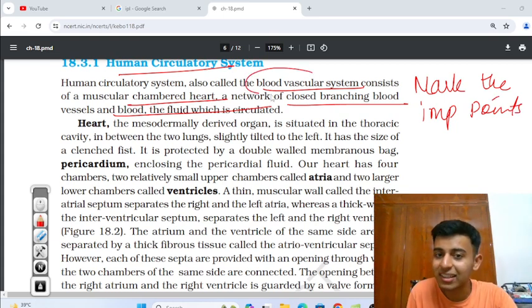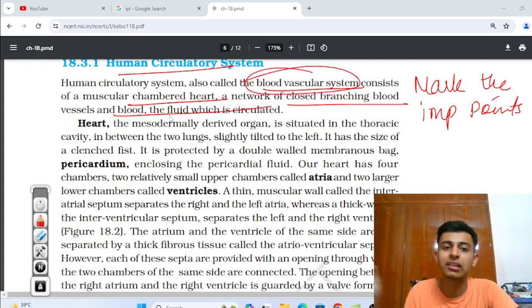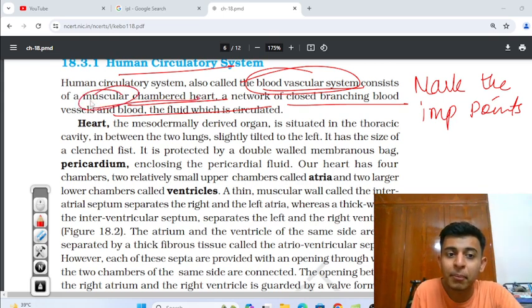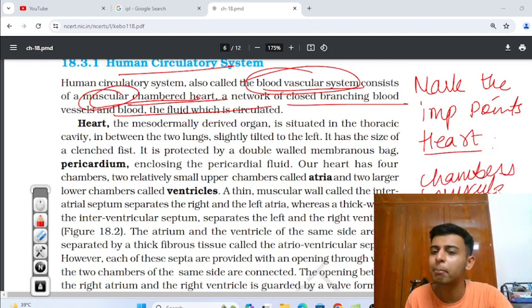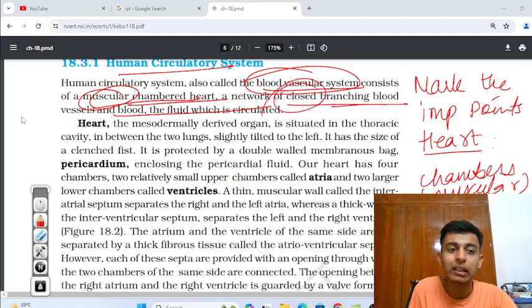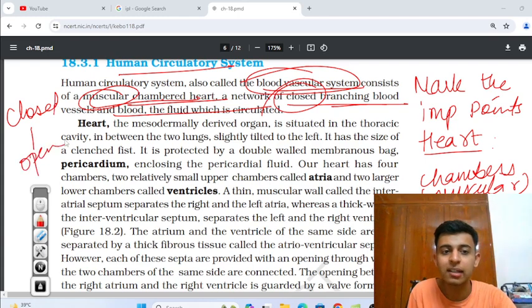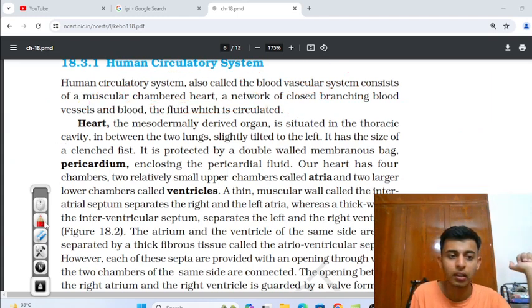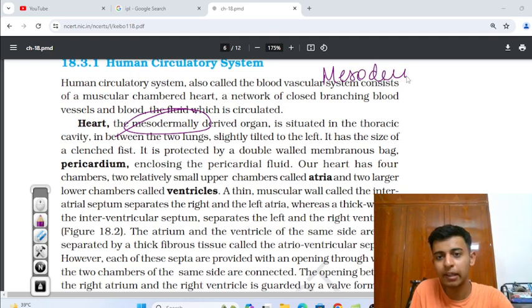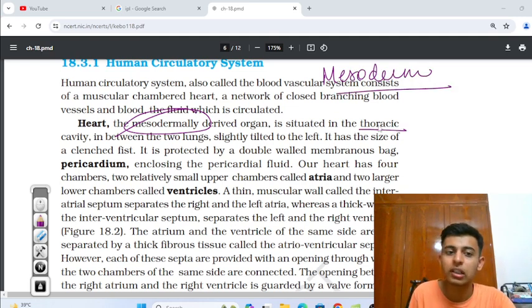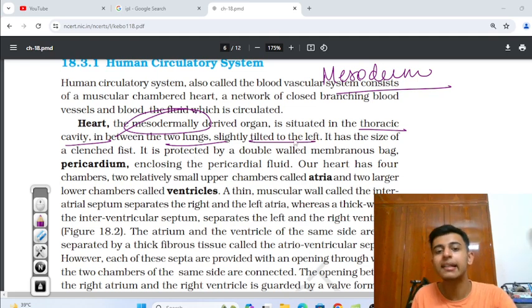So mark the important part. Here, see, blood vascular system, so human circulatory system is also called the blood vascular system. It consists of muscular chambered heart. It means in my human circulatory system, there is a heart which consists of certain chambers and which is muscular. It means made up of some muscles which are cardiac muscles, right? Network of closed branching blood vessels. Now they can change closed to open to make it an assertion reasoning. Correct, this way you'll have to study.